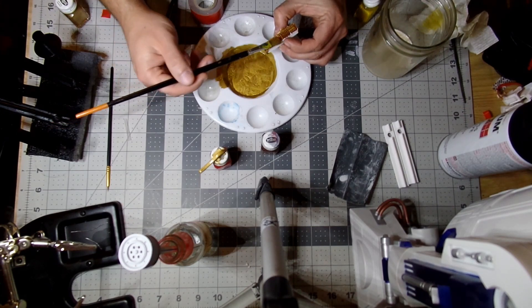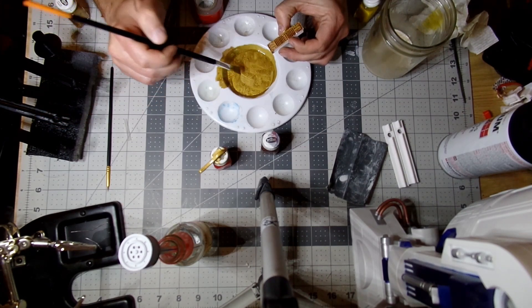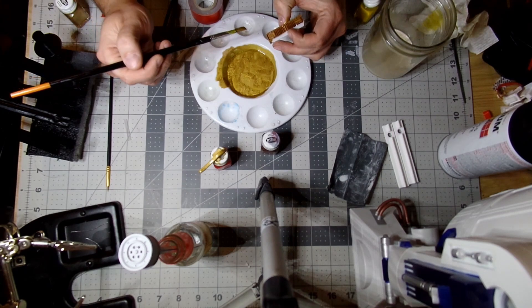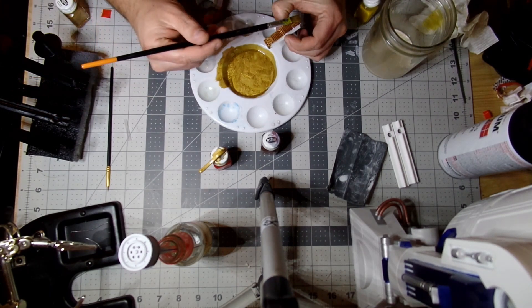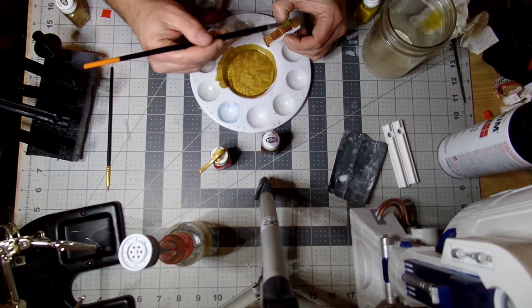But I didn't just use the straight gold enamel. I mixed it with a little bit of amber yellow. Amber signal yellow actually. And that makes it a little bit brighter. It looks a little bit more like gold.